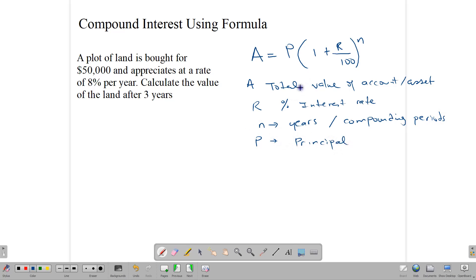So this formula is pretty simple to use. And all that you need is a calculator and you're good to go. So we start by saying the land is bought for $50,000, appreciates at a rate of 8% per year. Calculate the value of the land after three years. And so the value of the land is going to be, start with the principal, $50,000 times one plus the rate. The rate is 8% over 100 to the number of compounding periods, the number of years. That's three.